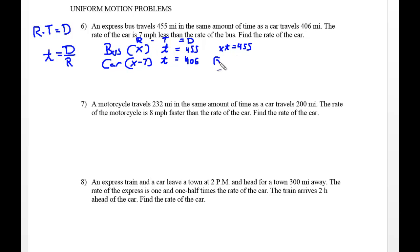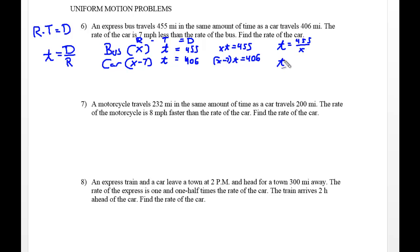Now we have two equations where rate times time equals distance: x times t equals 455, and x minus 7 times t equals 406. My suggestion is to write your equation and then solve for t — get t by itself. So t equals 455 divided by x, and dividing both sides by the binomial x minus 7, we get t equals 406 divided by x minus 7.